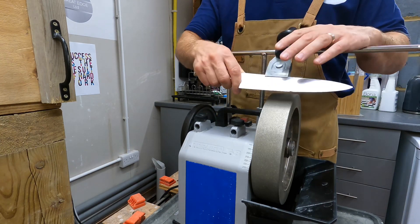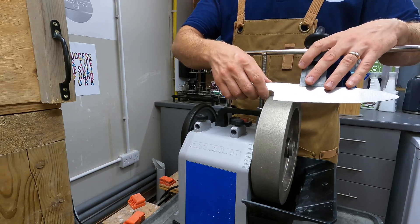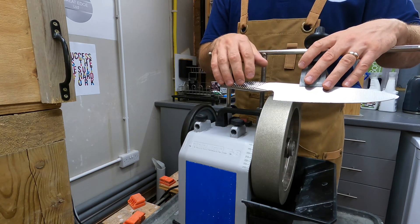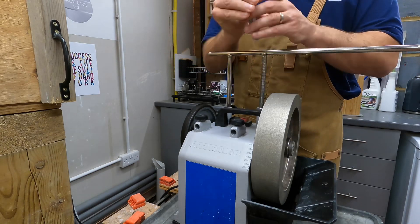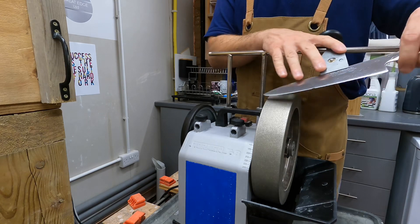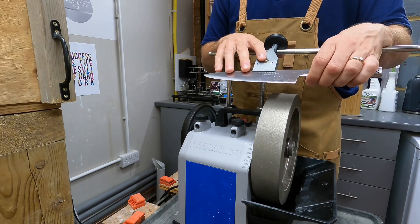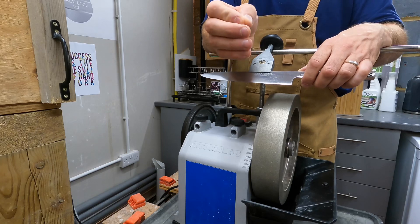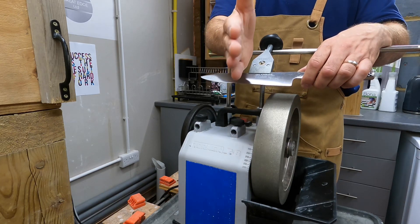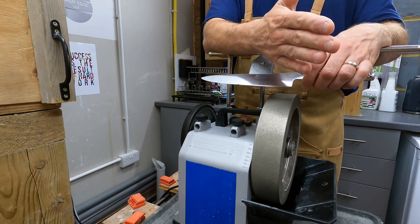One other thing, just to mention, in my older videos where I have done a little bit of sharpening on camera, you'll see I'd normally go heel to tip on one side, then flip it over, heel to tip on the other side. And I do that alternating pattern just to ensure that I'm always working back, keeping the apex in the center, not over grinding one side and moving the apex over.